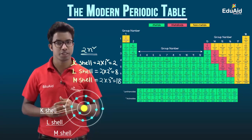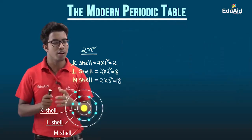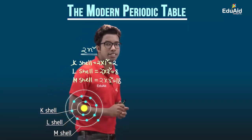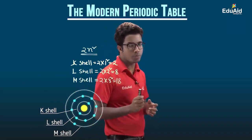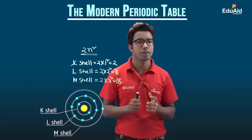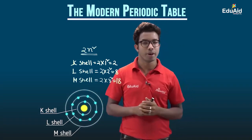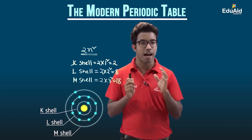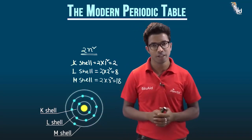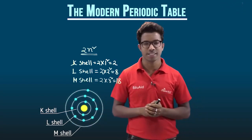That's all for this session. We have discussed about groups and periods in the modern periodic table. In the next session, we will discuss various properties — one of them being valency — and how these properties change throughout the modern periodic table.